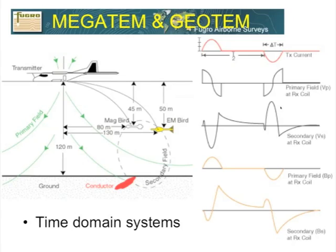Here's an illustration of the kind of data you get with a Megatem or GeoTEM. The plane is actually towing two different birds — a magnetics bird, and an EM receiver bird. About 50 meters below the flight line and 130 meters behind is the receiver coils in the EM bird, while the transmitter is around the plane itself. The transmitter generates the primary field in green, cutting through conductors, with the transmitter current shown in red setting up the transmitter field in the aerial section.